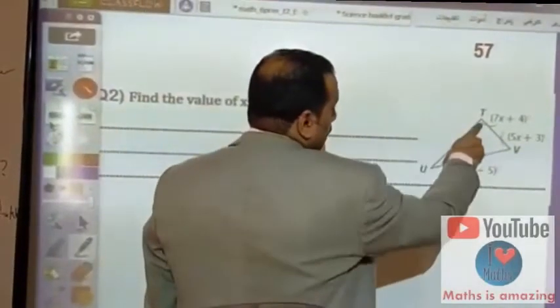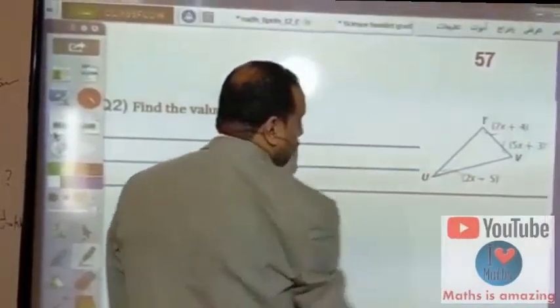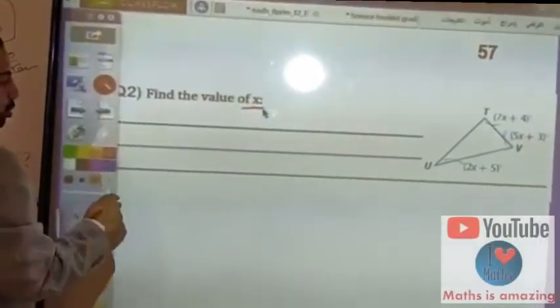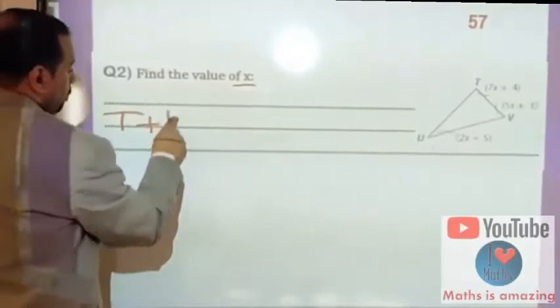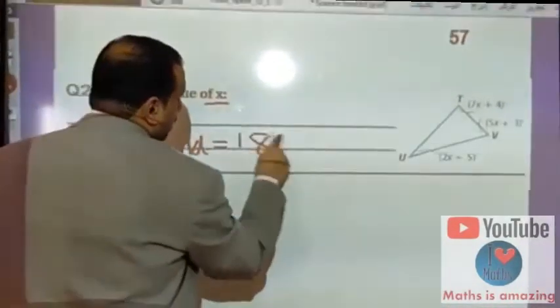In this triangle DVU, angle D is 7x plus 4, angle V is 5x plus 3, and angle U is 2x plus 5. To find the value of x, we know that the sum of angles in the triangle equals 180.